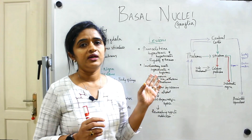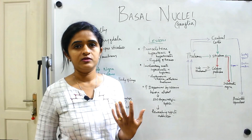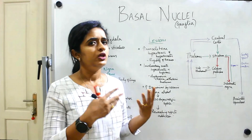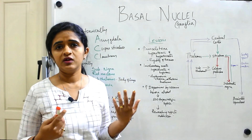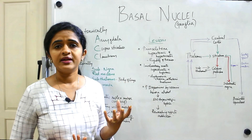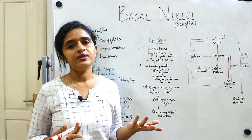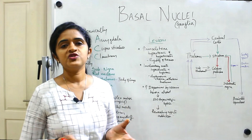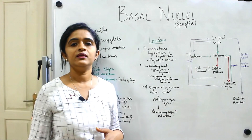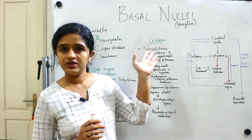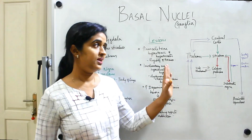The basal nuclei are considered part of the extrapyramidal system. The extrapyramidal system refers to any tract in the brain stem not included in the pyramidal tract. The pyramidal tract consists of fibers passing through the pyramid of the medulla — corticospinal, corticonuclear, and corticopontine fibers. All remaining connections in the brain stem that control the spinal cord for smooth motor functioning are called extrapyramidal. The basal nuclei are considered a system within the extrapyramidal system.